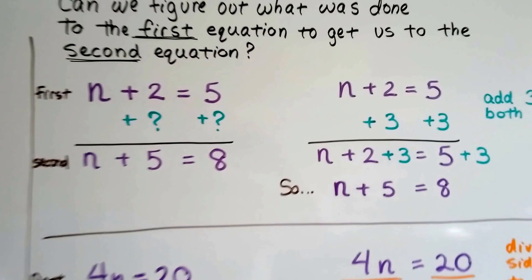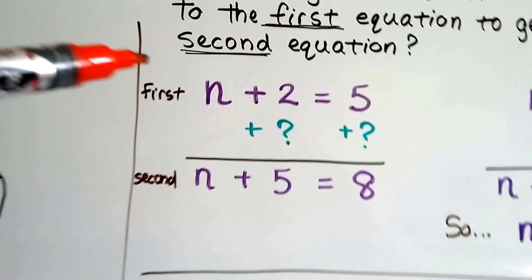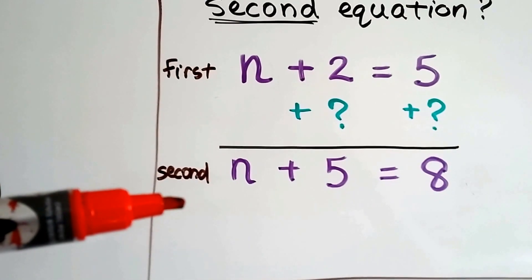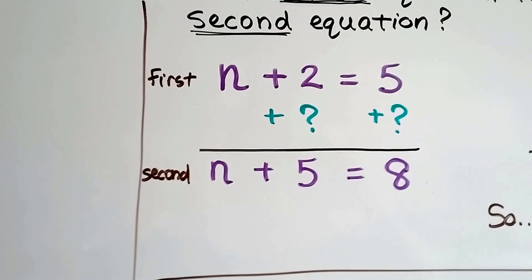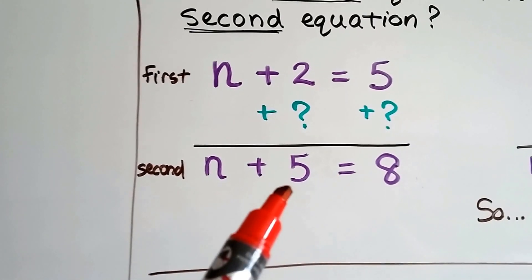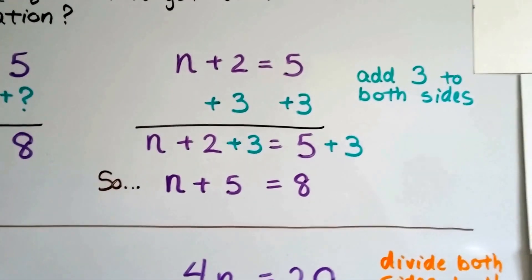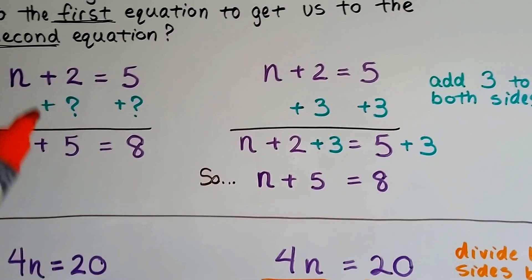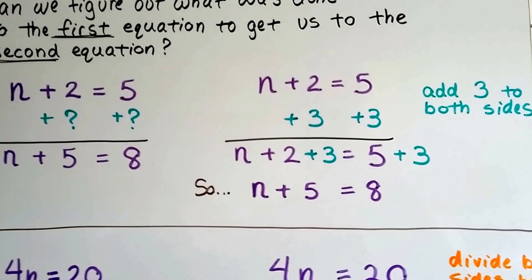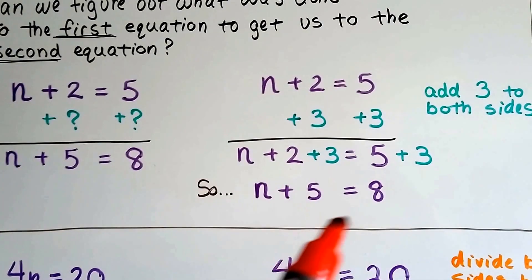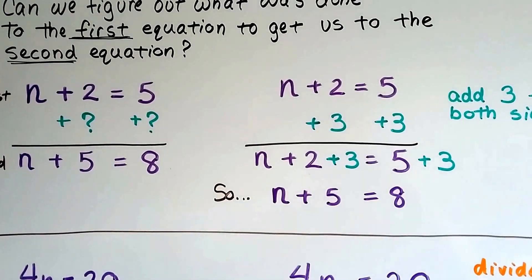Can we figure out what was done to the first equation to get us to the second equation? Here's the first equation, here's the second equation. What happened here to get us to this one? Well, that's kind of easy because we know 2 plus 3 is 5, and 5 plus 3 is 8. So what happened was we added 3 to both sides. And that got us from this equation to this equation. Now 2 plus 3 is 5 and 5 plus 3 is 8. We've got n plus 5 equals 8.